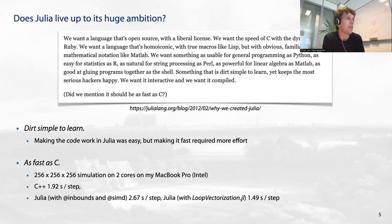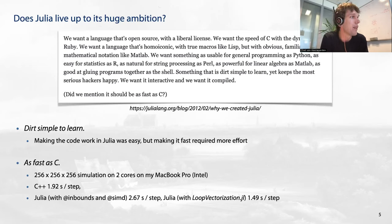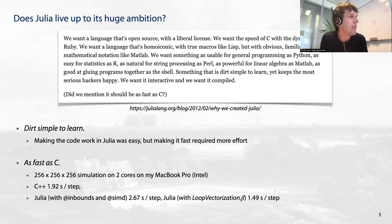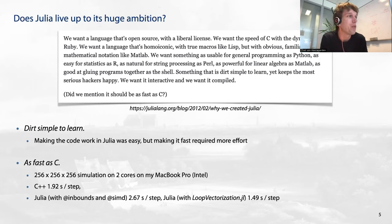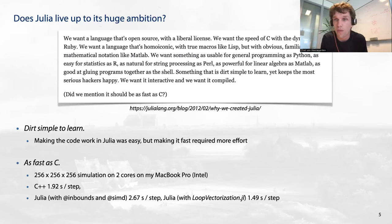I took a nice part from the famous Julia blog on motivation for the language. If you read it, it's extremely ambitious — they want to make the language that solves all problems of all other languages. As a scientist I'm quite skeptical by nature, so I was curious to see which of these strong statements hold. The most important claim — that it has the combination of being simple and being fast at the same time — I found that to really be true.